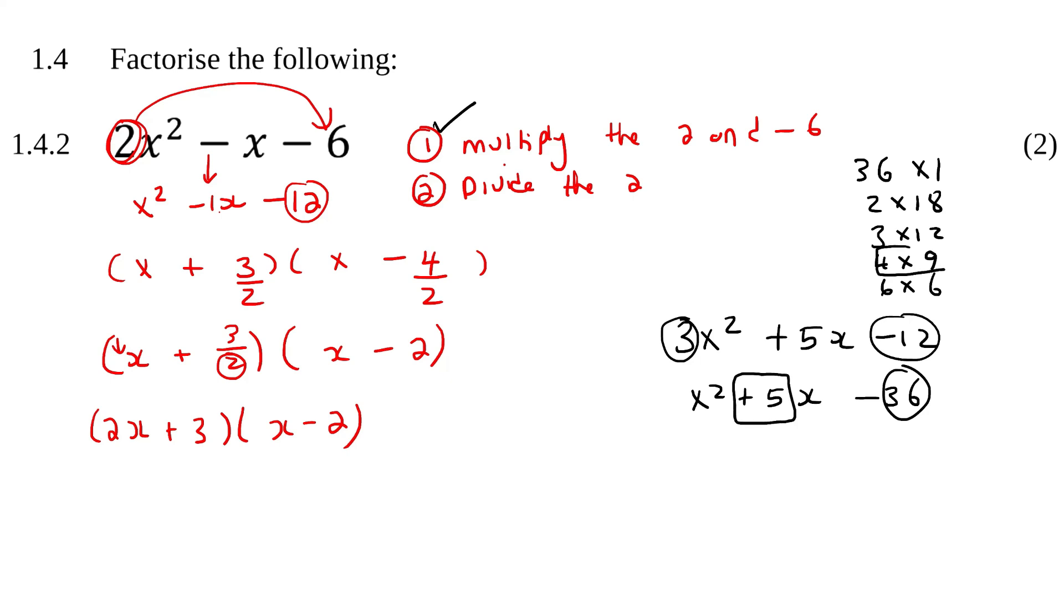And then you're going to try to see which ones of those can make this number. So we know that 4 and 9 can make 5. How?